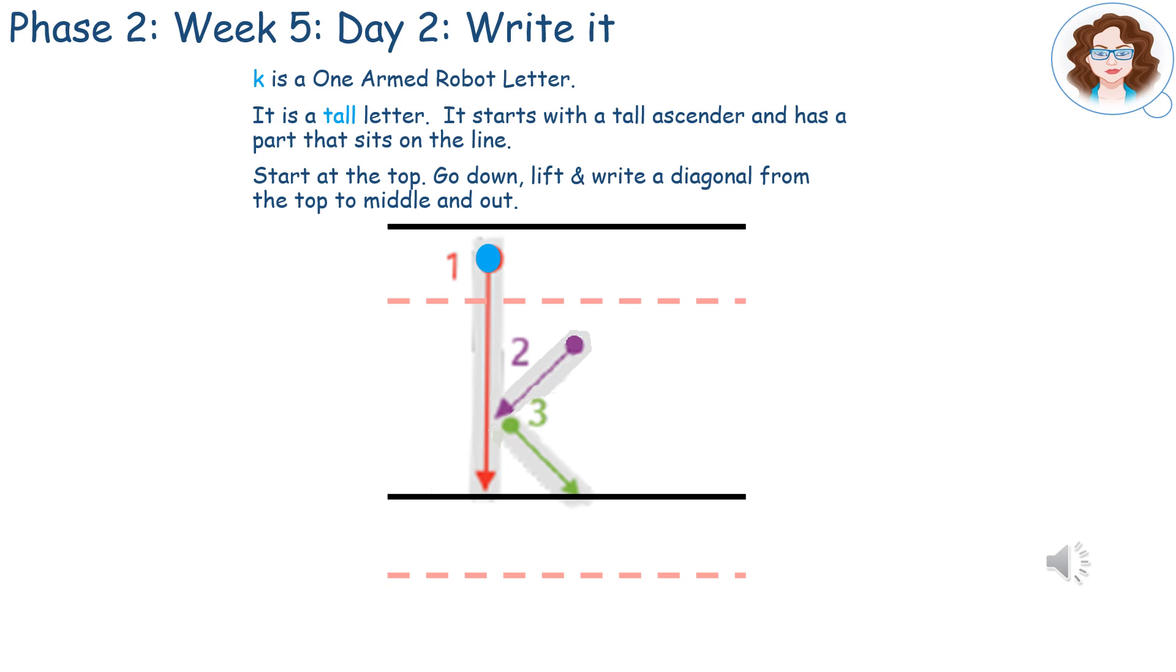Look at this funny letter. K is a one-armed robot letter. It is a tall letter. It starts with a tall ascender and has a part that sits on the line.